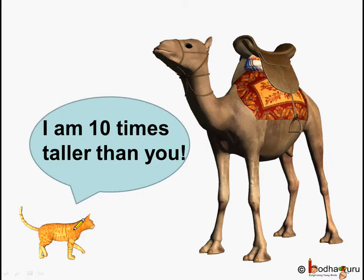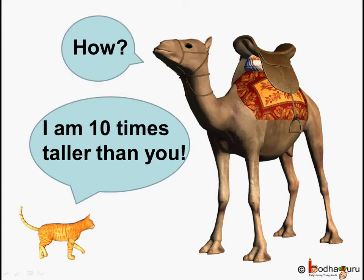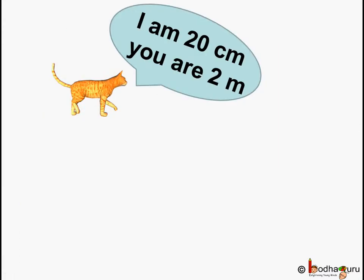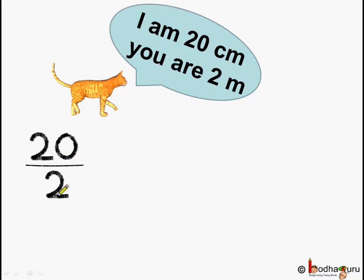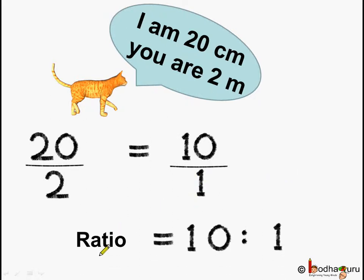One day the cat told the camel, I am 10 times taller than you. The camel was shocked and asked, how? The cat said, you are 2 meters and I am 20 centimeters. So 20 by 2 is equal to 10 by 1, which means the ratio of height of the cat to the height of camel is 10 is to 1.